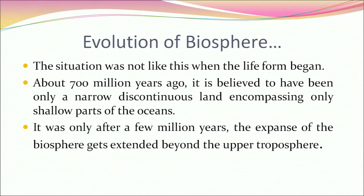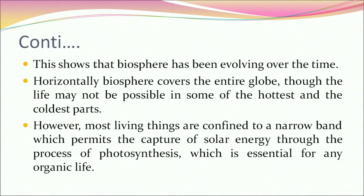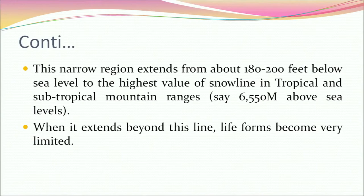Now let's learn about the evolution of biosphere. About 700 million years ago, life is believed to have been confined to only a narrow discontinuous land encompassing only shallow parts of the ocean. After a few million years, the expanse of the biosphere extended beyond the upper troposphere. Horizontally, biosphere covers the entire globe, though life may not be possible in some of the hottest and coldest parts. Most living things are confined to a narrow land that permits solar energy capture through photosynthesis. This region extends from about 180 to 200 feet below sea level to the highest snow line in tropical and subtropical mountain ranges, about 6,550 meters above sea level.